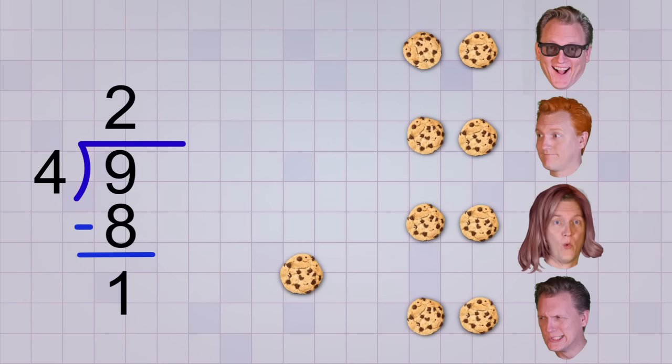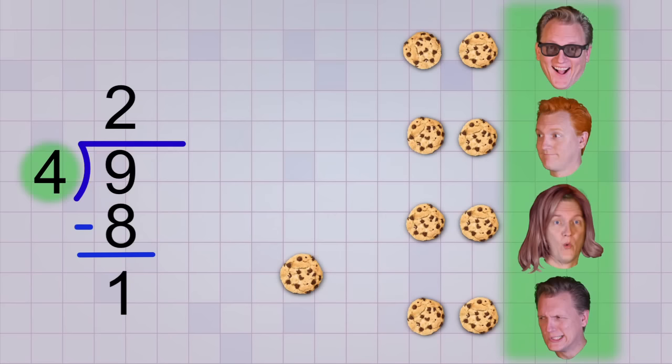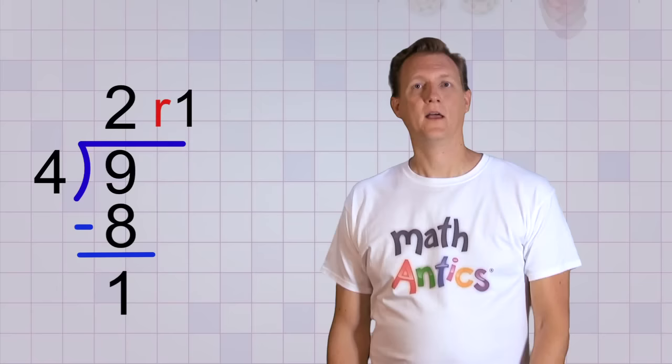Now that sounds good. It's less than our number of groups, and you can see with our cookie problem that it's exactly right. 9 cookies divided into 4 groups gives 2 cookies to each group, with 1 left over as a remainder, which we'll put right up here in our answer with an R for remainder. Perfect! And now you can see how you can do division without using pictures or cookies, but just with numbers and a procedure to follow.